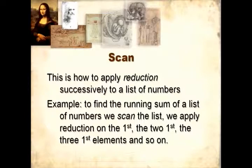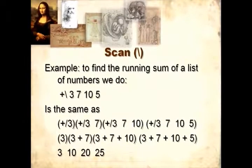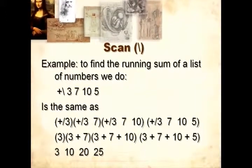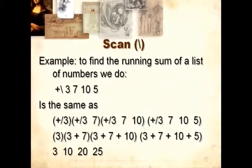We apply reduction on the first, reduction on the first two, reduction on the first three elements, and so on. Here, to find the running sum of a list of numbers, we do plus scan 3, 7, 10, 5.